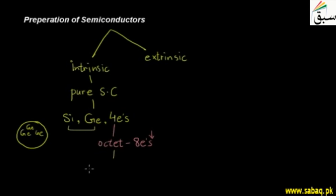In intrinsic semiconductors, current will be passed. To allow current to flow, we have to vary the temperature.